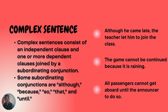From the examples: 'Although he came late, the teacher let him join the class.' Second example: 'The game cannot be continued because it is raining.' The last example: 'All passengers cannot get aboard until the announcer tells them to do so.' These illustrate how a dependent clause introduced by a subordinating conjunction is joined to an independent clause.